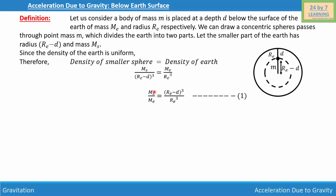After cross multiplication, our final result — equation 1 — is: mass of the smaller sphere over mass of the earth equals (r_e minus d)^3 over r_e^3.